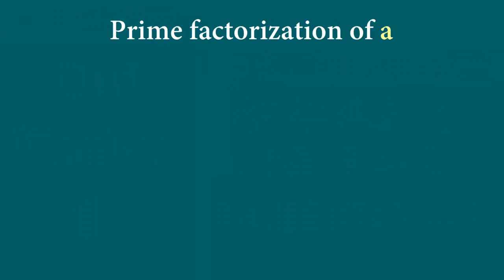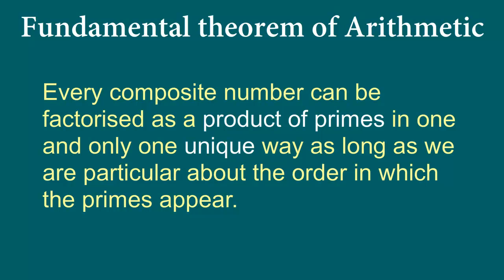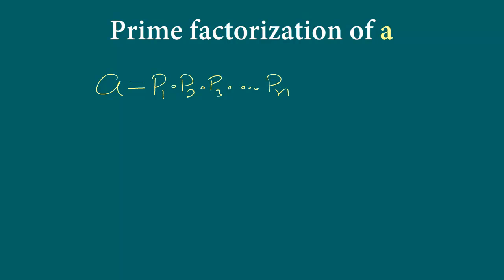Let's do a prime factorization of a. Now if a is any positive integer, we can write a as p1 times p2 times p3 dot dot dot pn where p1, p2, p3, pn they are all prime numbers. So why can we do this? Recall that we have learned the fundamental theorem of arithmetic. And what does it state? Fundamental theorem of arithmetic states that every composite number can be factorized as a product of primes in one and only one unique way. So what we have here is we have written our composite number as a product of prime numbers.